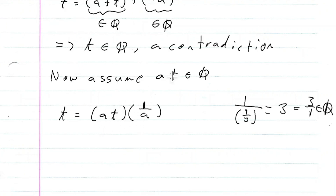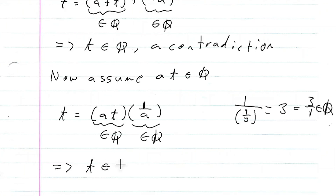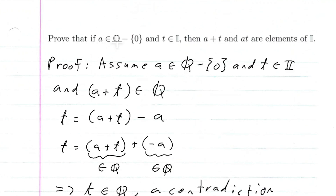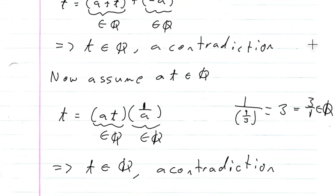We assumed that A times T was rational. We know from a previous result that the product of two rational numbers is rational. So this implies that T is rational. But we assumed T was irrational — so this is another contradiction. Thus, if A is rational and not zero and T is irrational, then both the sum and the product of those two numbers must be irrational. And that's our proof.